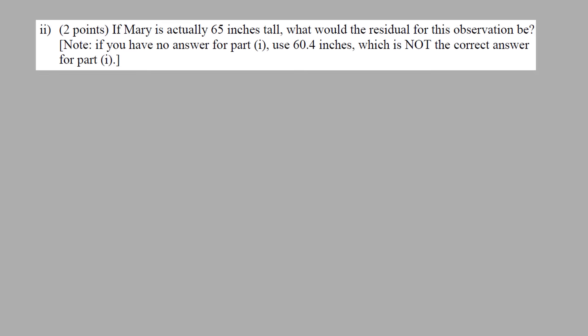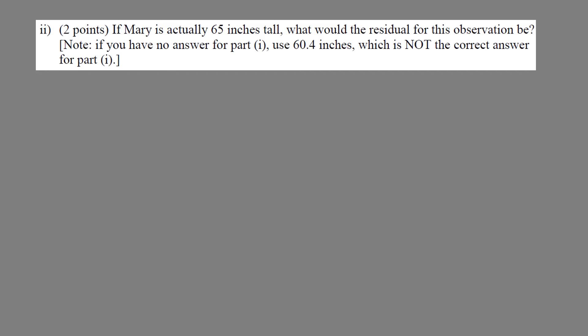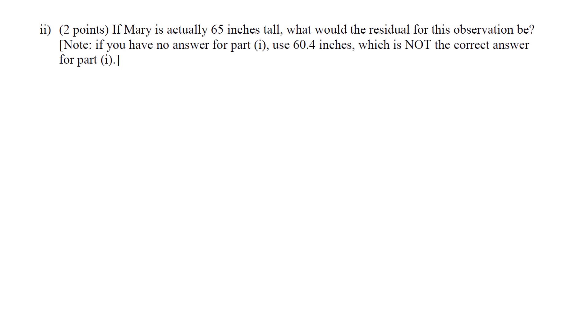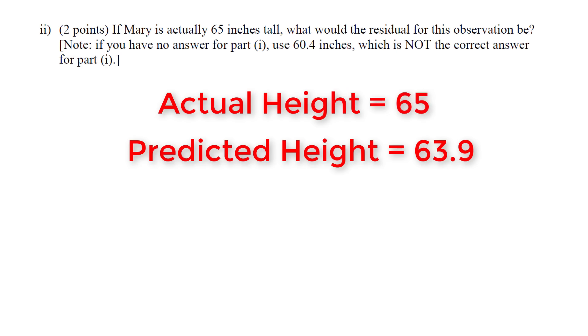If Mary is actually 65 inches tall, that's her y—the actual value. What would the residual be? We previously found her predicted height is 63.9, which is ŷ. So y equals 65 (actual) and ŷ equals 63.9 (predicted). We use the equation: residual equals actual minus predicted.